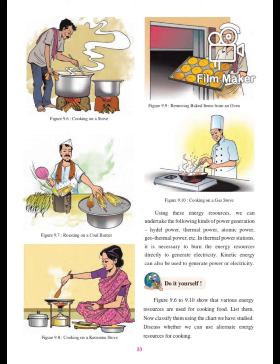See page number 53, children. You can see a man cooking food on a stove using firewood — wood is used as a fuel. Figure 9.6 shows roasting on a coal burner, where coal is used to roast corn. Then cooking on a kerosene stove — there is a lady cooking chapati on a kerosene stove. Next, removing baked items from an oven. And last, cooking on a gas stove. These are the different energy resources used for cooking.